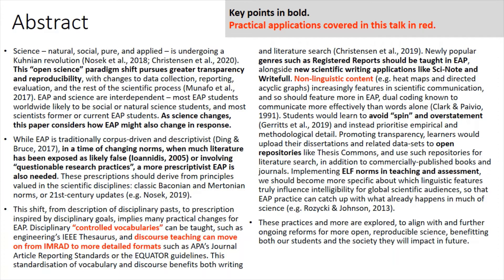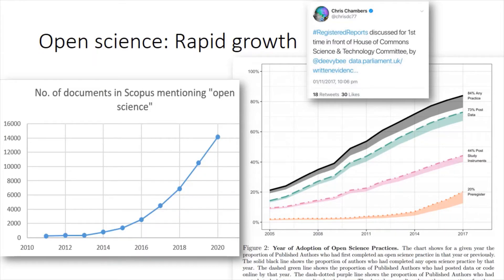Here's the abstract. Pause if you want to look in more detail. I've highlighted the key points in bold and the three key practical applications I'll talk about in this talk in red. A couple of graphs show how people are talking more about open science in scientific research, doing it more in their research, and even governments and policy makers are paying more attention to these scientific reforms.